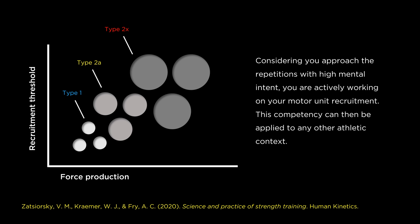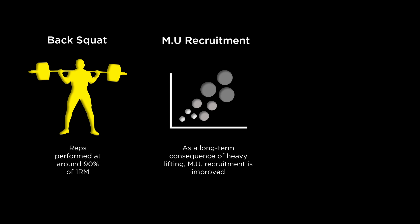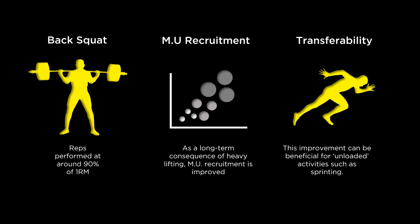Another reason why the argument is flawed is that considering you approach the heavy repetitions with high mental intent, you are actively working on your motor unit recruitment. With improved mental intent and improved motor unit recruitment, you will therefore be able to pack more force into your muscular actions. Consider performing a set of squats at around 90% of one repetition max — you would have to recruit as many motor units as possible to finish the task because of the challenging intensity. The speed of the movement will be relatively slow, but you will still train your competency in motor unit recruitment, so that when you approach unloaded conditions later, you will have the mental intention and the competency to produce a lot of force in a short period of time, and you will thereby become an explosive athlete.